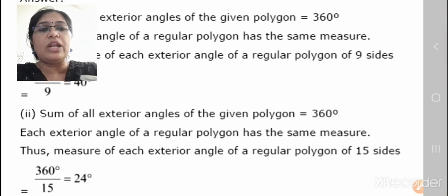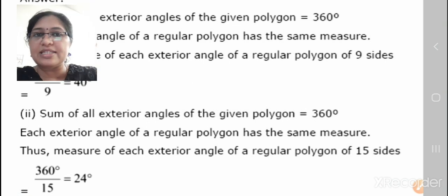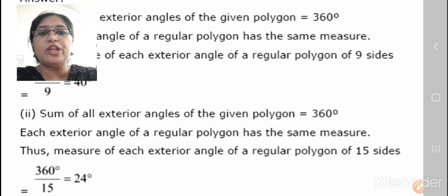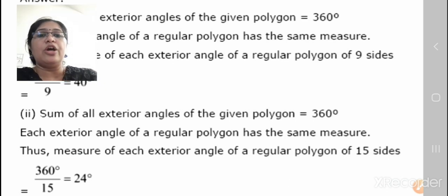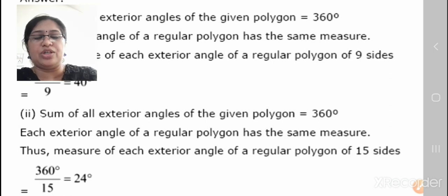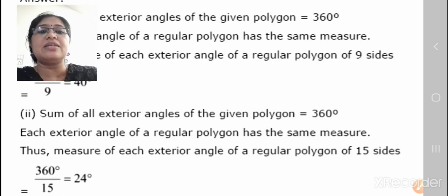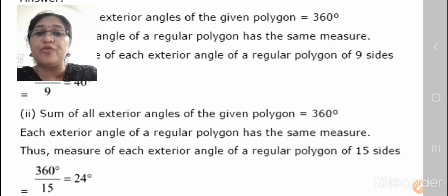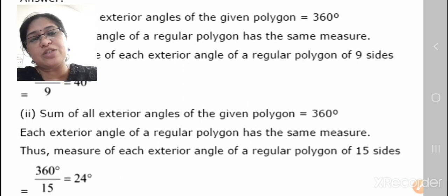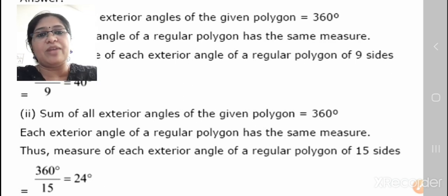The sum of all exterior angles of a polygon is 360 degrees. Each exterior angle of a regular polygon has the same measure. For a regular polygon of 15 sides, each exterior angle equals 360 divided by 15, which equals 24 degrees.